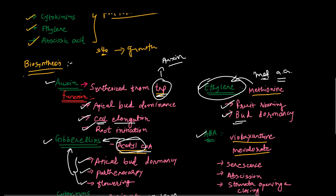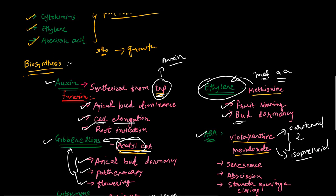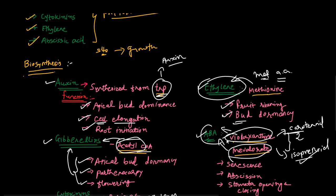The last major hormone is abscisic acid. There are two pathways for the synthesis of abscisic acid: the carotenoid pathway and the isoprenoid pathway. In the carotenoid pathway, abscisic acid is synthesized from violaxanthin, a xanthophyll. In the isoprenoid pathway, the precursor substance is mevalonate.